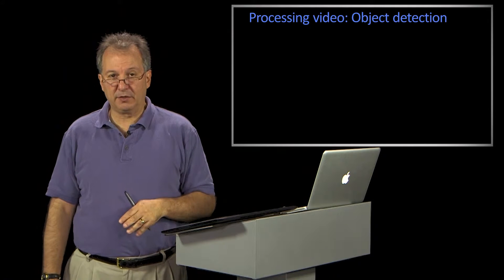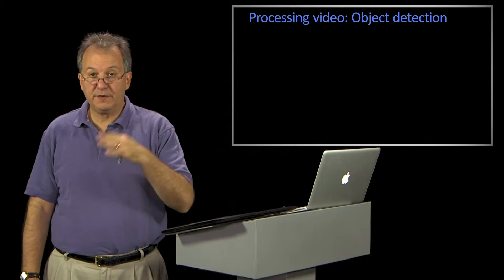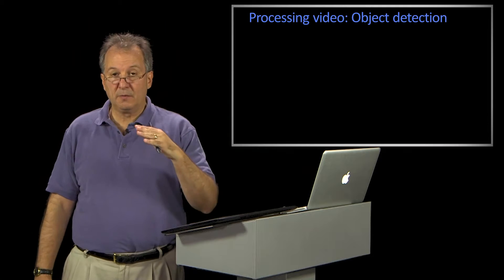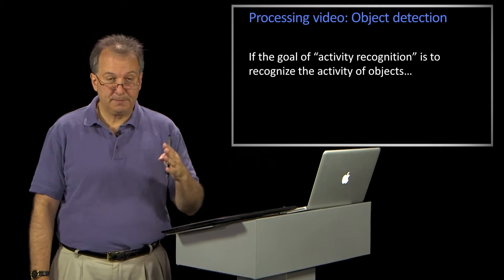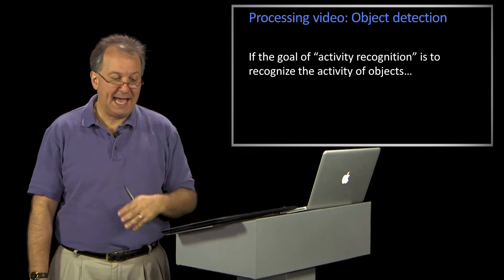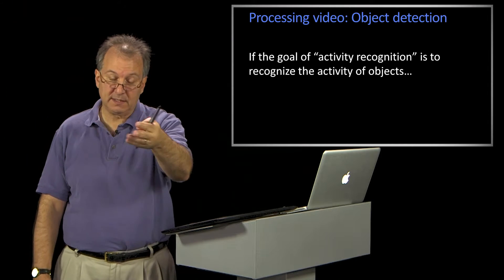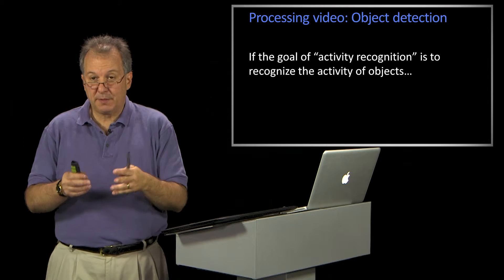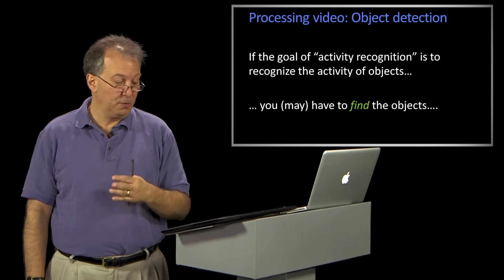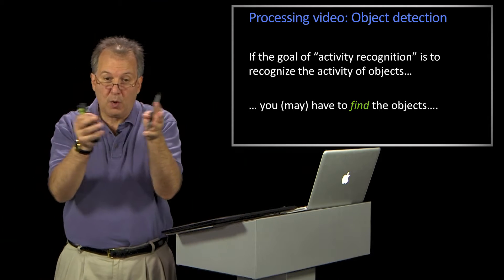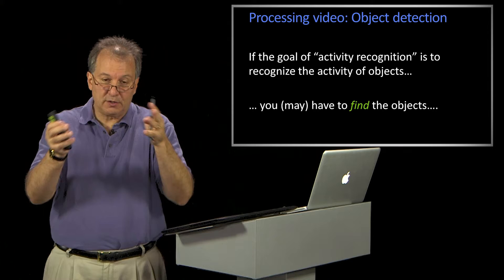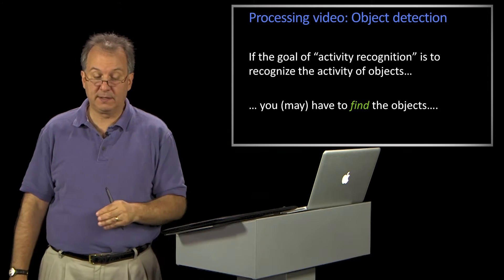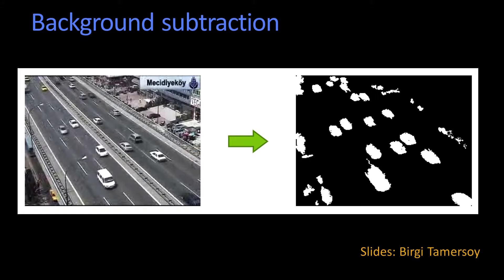So let's talk a little bit about some basic computer vision in video. One might be object detection. Suppose your goal, and we'll talk about this next time, is activity recognition. You want to recognize what's going on, the activity of objects, of people. But there are these entities doing something, so you might have to find these entities. What are the things in here that are moving, that are doing something, that I need to try to label what their activity is? Nominally or notionally, you can think of my goal as to find the independently moving things that are in this video.